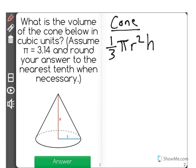So in this case that would be 1/3 times pi, our radius is 3, so 3 squared, times our height of 8.